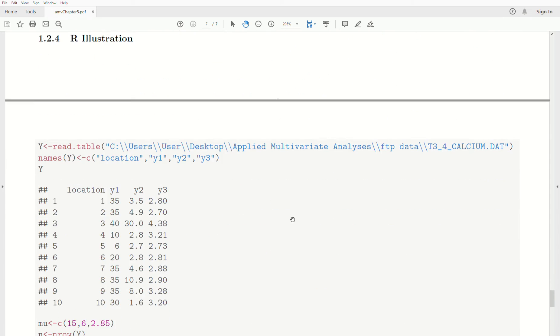For the R illustration, I have the FTP data stored in a folder called Applied Multivariate Analysis, FTP data. The data, this one is just T34 calcium dot dat, and you just read it in. R doesn't, I don't know if that's a forward slash or backslash, I always get them mixed up, but that's a command function in R. So, you have to put two of them. It says the command function, and then you see it again, we need that literally in our directory. So, you have to put two of them. It's kind of wonky in that way.